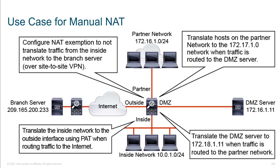Here's a use case for manual NAT. We'll configure NAT exemption to not translate traffic from the inside network to the branch server — we're essentially shutting NAT off. Even though there's a generic rule that takes traffic from inside and applies the outside interface's IP, we create a more specific rule: when traffic comes from the inside network destined to the branch network, do not translate it. We don't want to change it to a public address because it's not going to a public destination — it's just going through our tunnel.